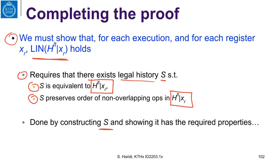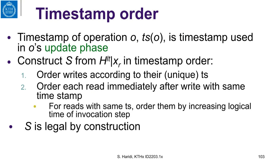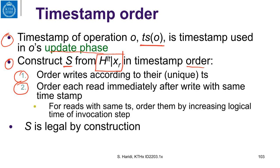We have done this before when we proved linearizability of the multiple-writer multiple-reader algorithm. Let's show how to construct this sequential history. We know the timestamp of an operation — it is the timestamp used in the update phase. We construct S from the logical time trace in timestamp order: we order writes according to their unique timestamps, order reads immediately after the write with the same timestamp, and for reads with the same timestamp, we order them according to the increasing logical time of their invocation. S is legal by construction.